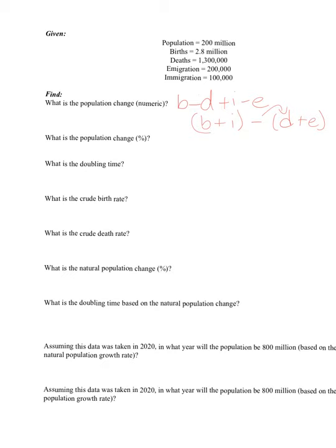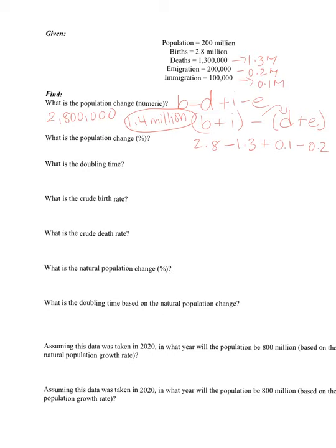I could do this in my calculator. I put in 2.8 million and I need to know that number — millions, billions, etc. I could write all of these as: births = 2.8 million, deaths = 1.3 million, immigration = 0.2 million, emigration = 0.1 million. So: 2.8 minus 1.3 plus 0.1 minus 0.2 gives an answer of 1.4 million. That's the numeric population change.